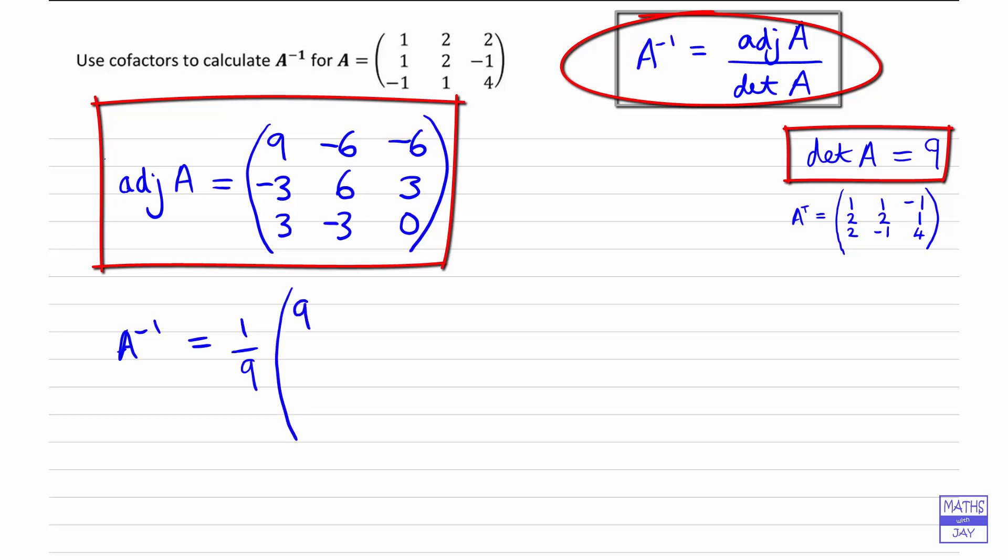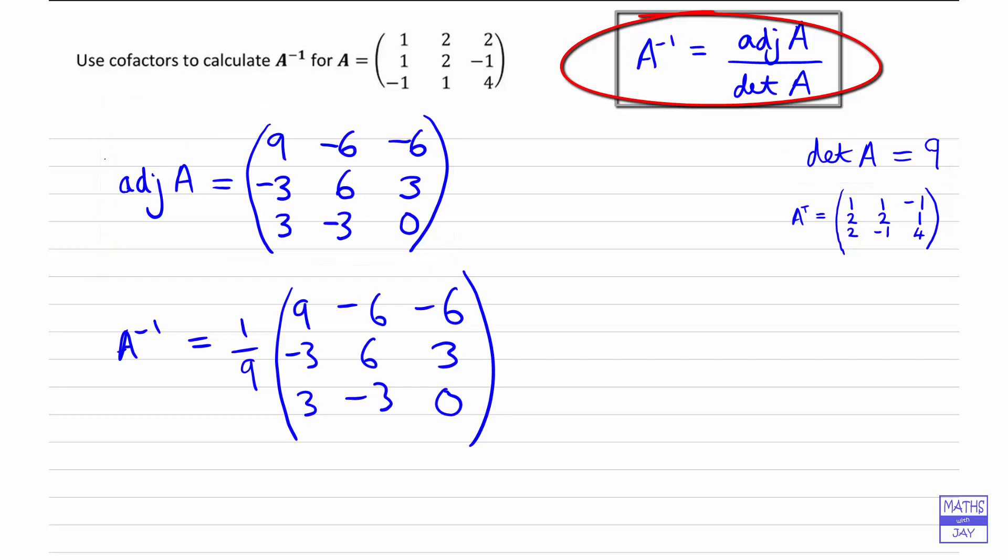So here we are. And we could take the ninth inside, or it's actually simpler just to take the three inside, isn't it? So we don't have lots of fractions. So let's divide each number inside by three, as we've multiplied the ninth by three to get a third. So dividing everything by three,